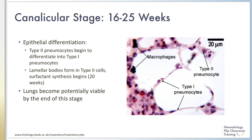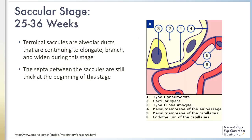Toward the end of the canalicular stage, the preterm lung is potentially viable. The saccular stage occurs between 25 and 36 weeks. In this stage, terminal saccules continue to differentiate. Terminal saccules are alveolar ducts that are elongating, branching, and widening.